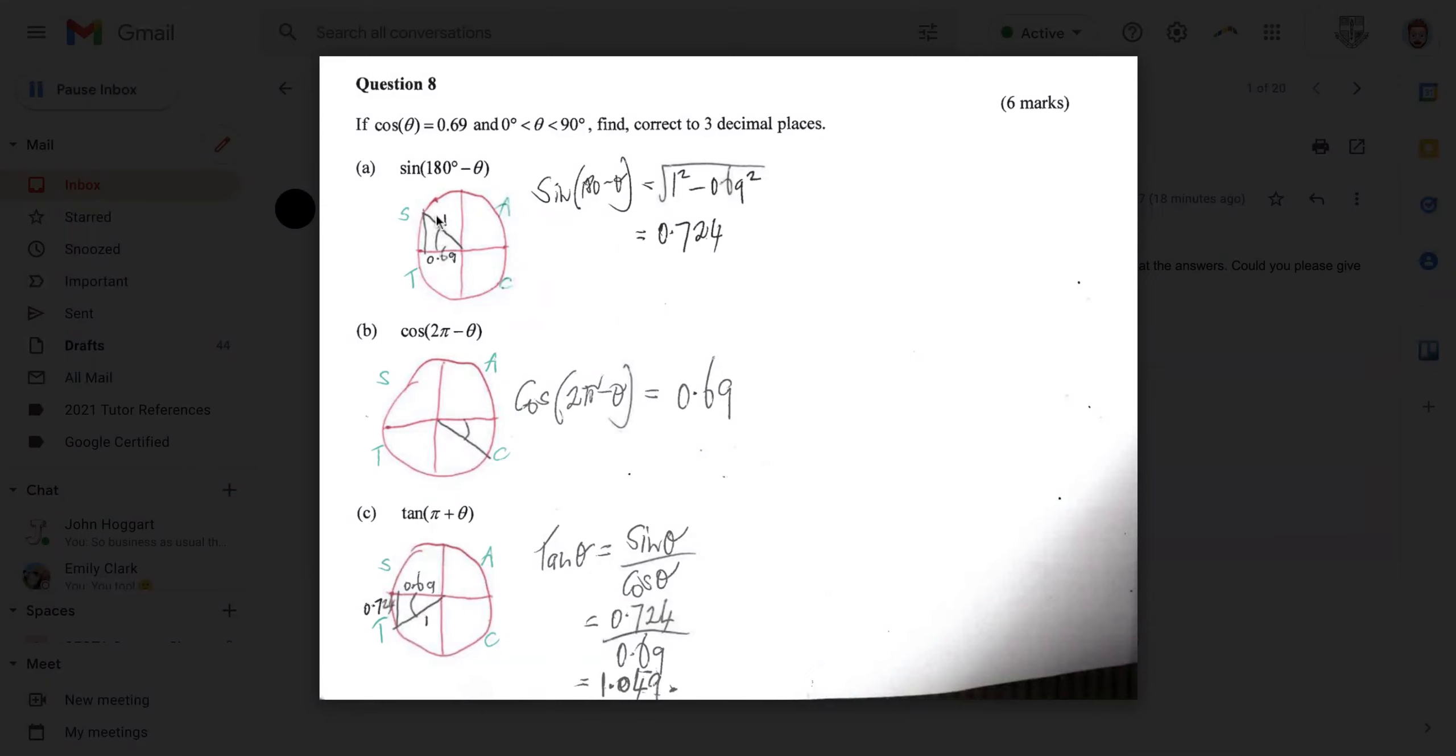So 180 minus theta is going to be in this quadrant here. And this is really important because knowing which quadrant the angle is going to land in is our key to solving this problem. And we can see it's going to land in this quadrant where sine is positive. So using our understanding of cast, we can say that sine of 180 minus theta is the same as sine theta.